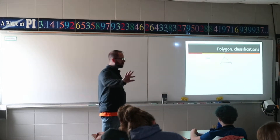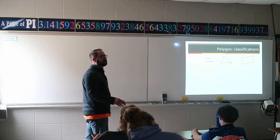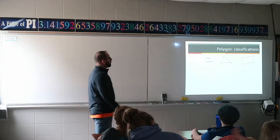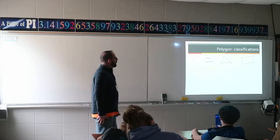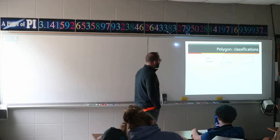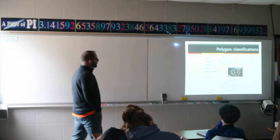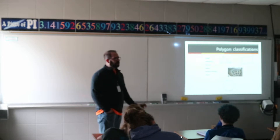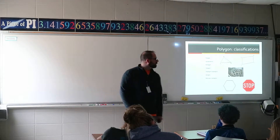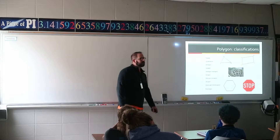We'll also talk about regular versus irregular in a moment. A quadrilateral is a four-sided figure — it could be a rectangle, square, trapezoid, or parallelogram. Pentagon is five-sided, hexagon is six, heptagon or septagon is seven, octagon is eight — spelled with an A. Nonagon is nine — some people write 'nine-gon,' that's in the book, but nonagon is the correct term. Decagon is ten, then eleven-gon, and dodecagon is twelve.